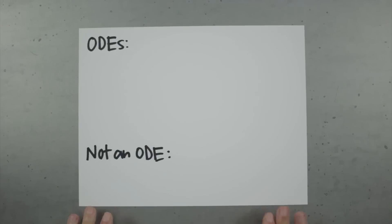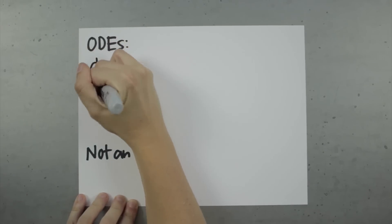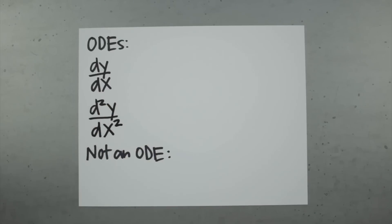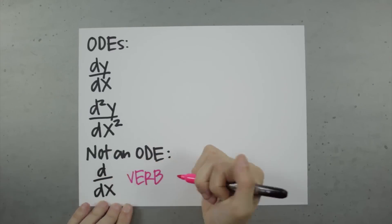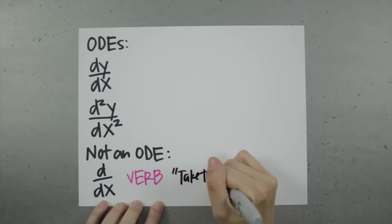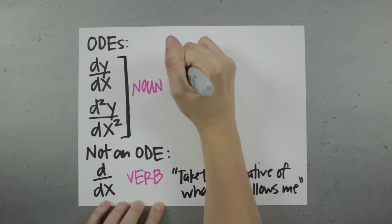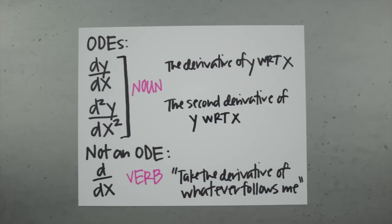The other broad category of differential equations is ordinary differential equations. The easiest way to think about ordinary differential equations is that they are any equation that contains something like dy over dx, or d squared y over dx squared. This does not include d over dx. d over dx is a verb, or a command that means take the derivative of whatever follows me. dy over dx, on the other hand, is a noun that means the derivative of y with respect to x. It is literally a derivative function itself.